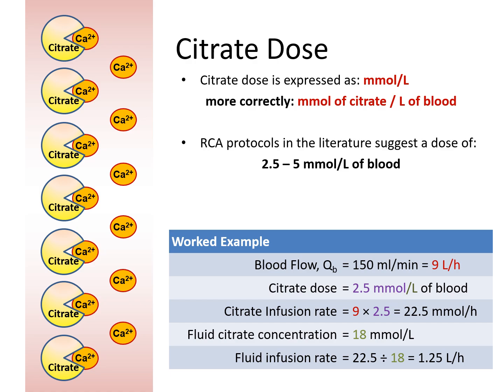The citrate infusion rate would be 9 multiplied by 2.5, and that gives us 22.5 millimoles per hour. If we have a fluid citrate concentration of 18 millimoles per liter, the fluid infusion rate would be 22.5 divided by 18, and that is 1.25 liters per hour.